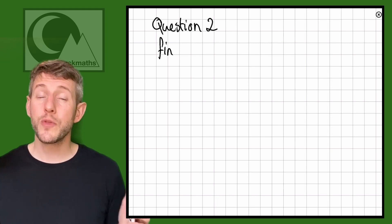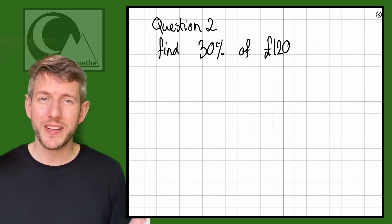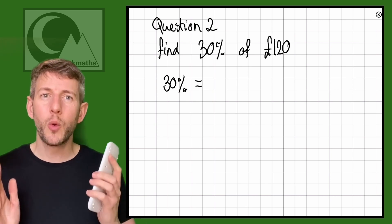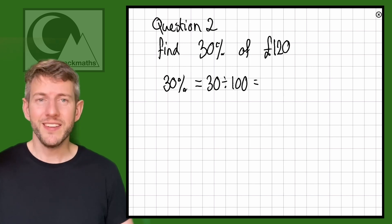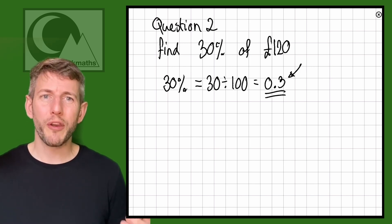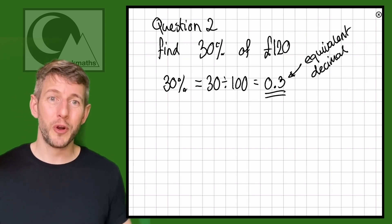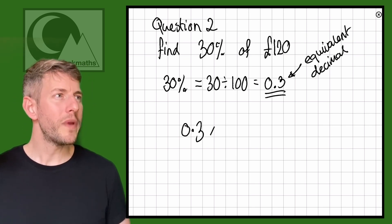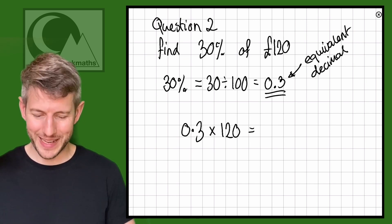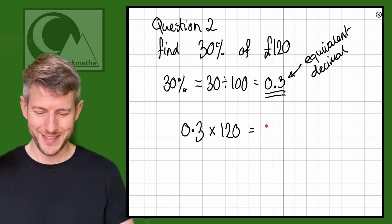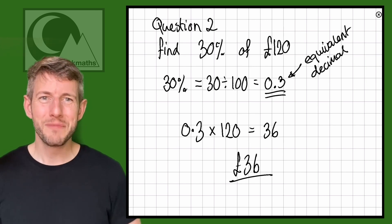Let's try it again for question two: find 30% of 120. It's all about equivalent decimals. 30 divided by 100 equals 0.3, so 30% is equivalent to 0.3. Now we do 0.3 times 120, and that equals 36 — which is what we got last time.